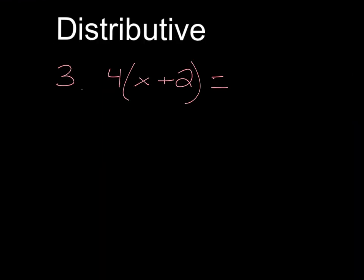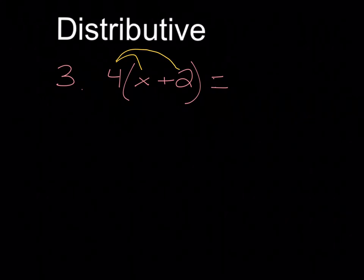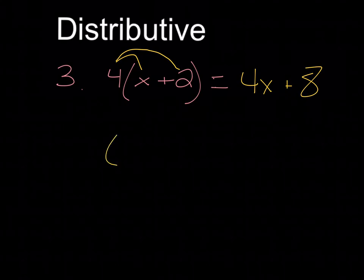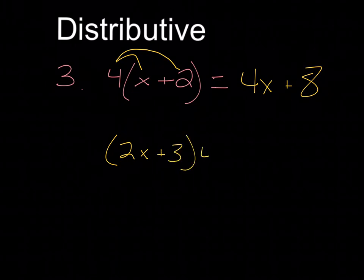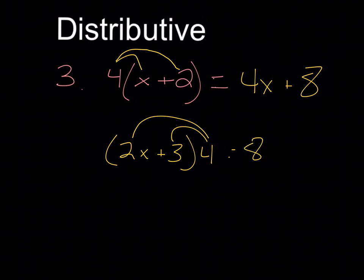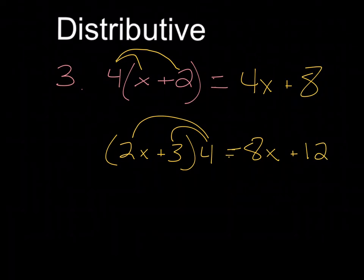The distributive property is when the 4 here is shared with what's inside. So I'm doing 4 times the X and times the 2. So I get 4X plus 4 times 2 is 8. The order could also be where the number is behind: something like 2X plus 3, times 4. The 4 is shared with what's inside: 4 times 2 is 8, so that's 8X, plus 4 times 3 is 12. That's the distributive property.